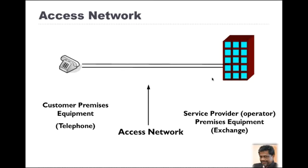Here you can see this is the telephone and this is the exchange. The access network connects them, and the telephone exchange is the service provider's property. Therefore, we can say this is the service provider premises or service provider network.